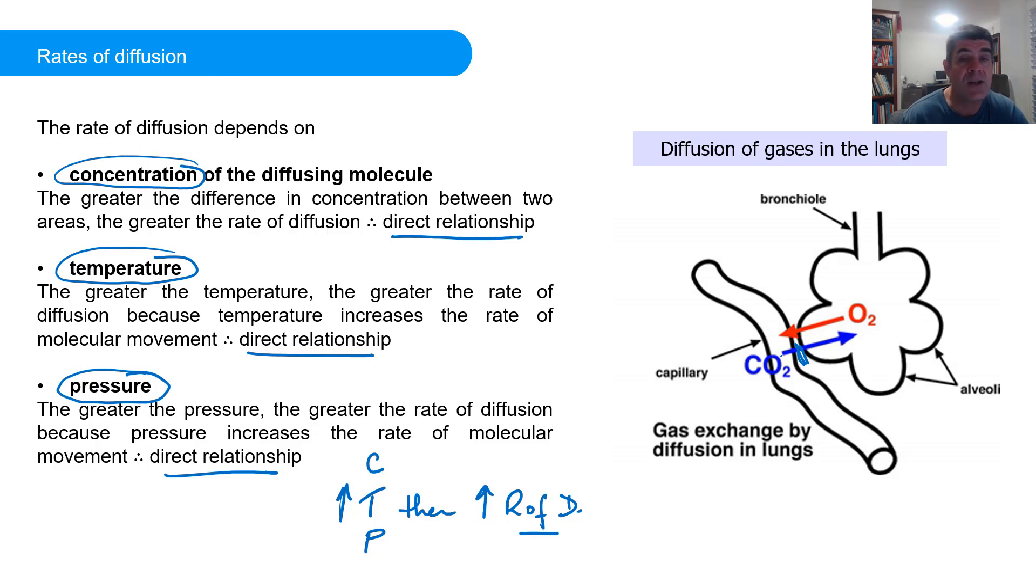Carbon dioxide, on the other hand, goes the other way. The concentration of carbon dioxide is high in the blood, much lower in the alveoli. So the net movement, according to diffusion, is going to be from the blood system into the lungs.